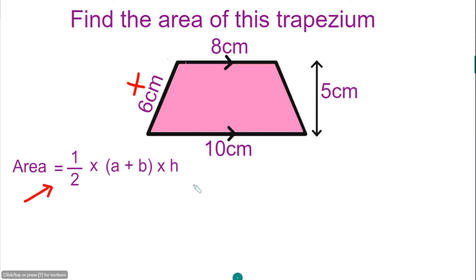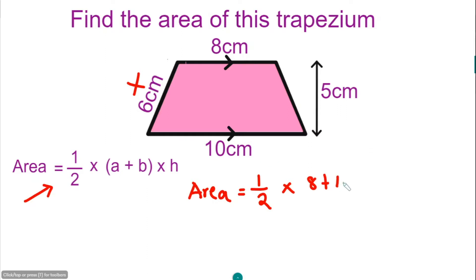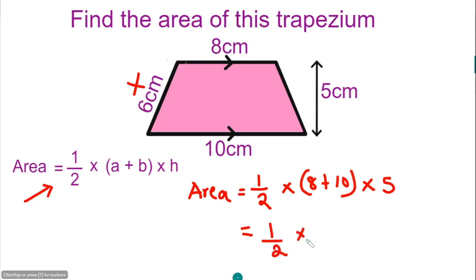The area of the trapezium is going to be a half, multiply the sum of the parallel sides A and B: A is 8 plus B which is 10 — put this in a bracket — then multiply by the vertical height, that's 5. Working this out, it's a half times 18.